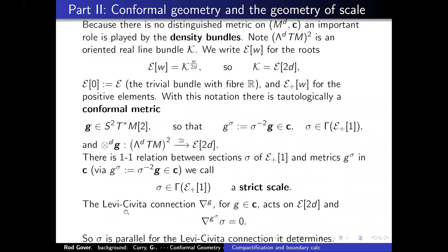The Levi-Civita connection for any metric in the conformal class acts on these density bundles — obviously, since the density bundle comes from tensor powers of the tangent bundle. Moreover, if you take the Levi-Civita connection for the metric determined by sigma, then that Levi-Civita connection actually preserves sigma: sigma is parallel for that connection. This is important in calculations.